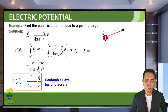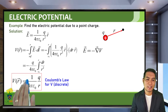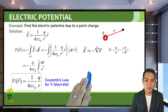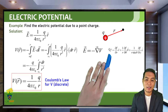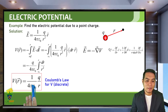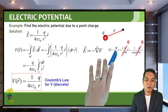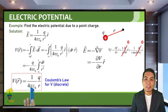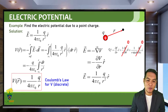We can do the process in reverse: if given the electric potential, use the negative gradient formula to find the electric field. Since this is spherical coordinates, we use the gradient in spherical. The potential only depends on R, so the gradient is simply the partial of V with respect to R times R-hat, with a negative sign. The derivative of 1/R is negative 1/R², and with the negative sign, we get back Coulomb's law: E = KQ/R² R-hat.